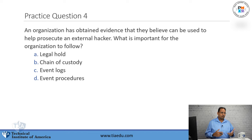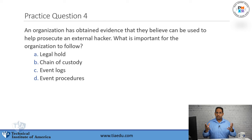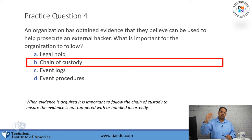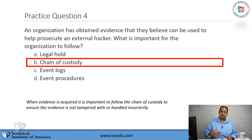Question four: An organization has obtained evidence that they believe can be used to help prosecute an external hacker. What is important for the organization to follow? A, legal hold. B, chain of custody. C, event logs. D, event procedures. The answer is chain of custody. When you gather evidence, you want to make sure that you follow the chain of custody — a document that tracks all the movement, collections, and who's dealing with the evidence: who collected it, when, where it was stored, who took it, who analyzed it. This ensures the evidence is not tampered with and maintains integrity.